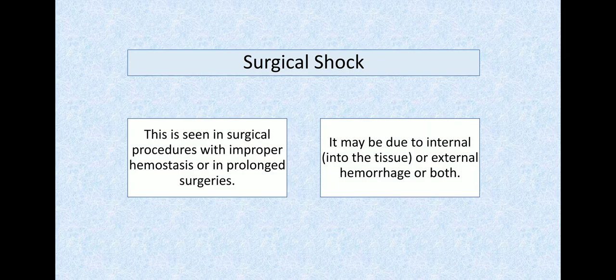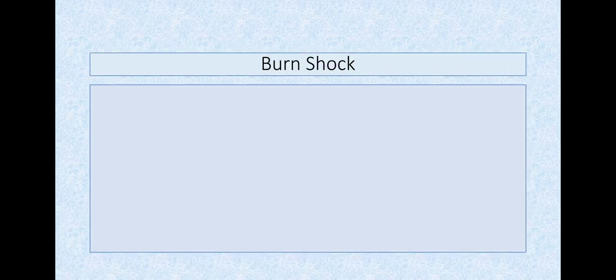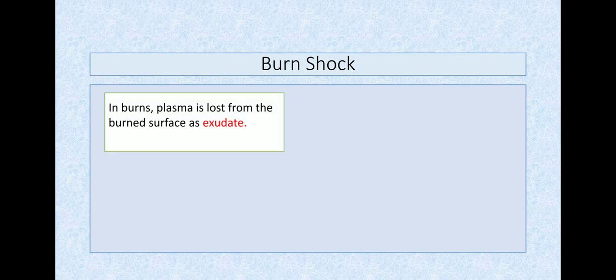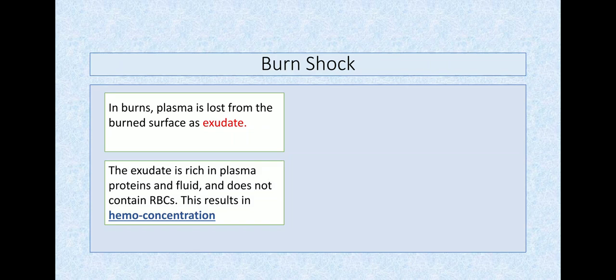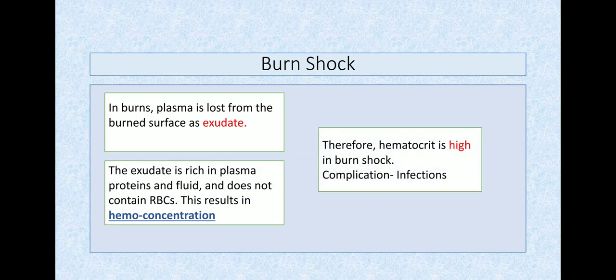That results in hypovolemia. In burn shock with severe degree burns, epidermis and dermis are gone, so the skin barrier is gone and plasma keeps exudating. The plasma lost doesn't contain RBCs. In fact, the only type of shock associated with hemoconcentration or high hematocrit is burn shock, because the burnt area weeps plasma-protein-rich fluid through capillary walls and RBCs don't move out.